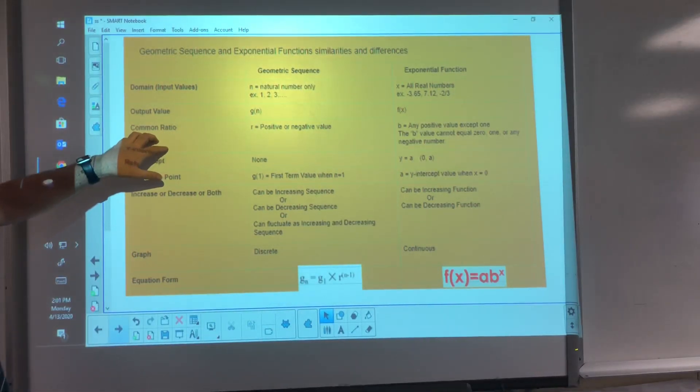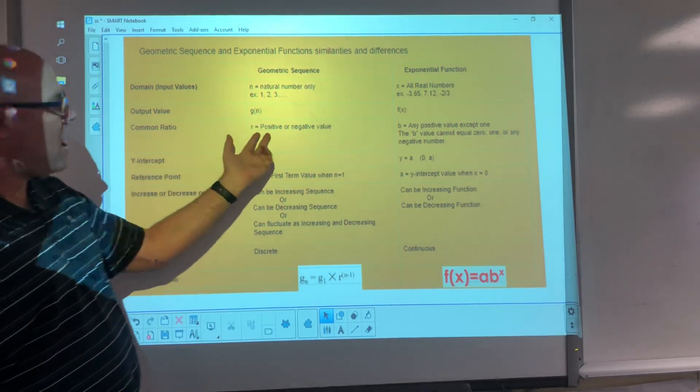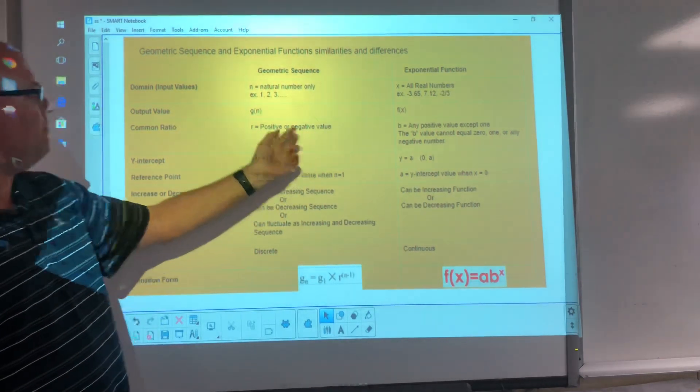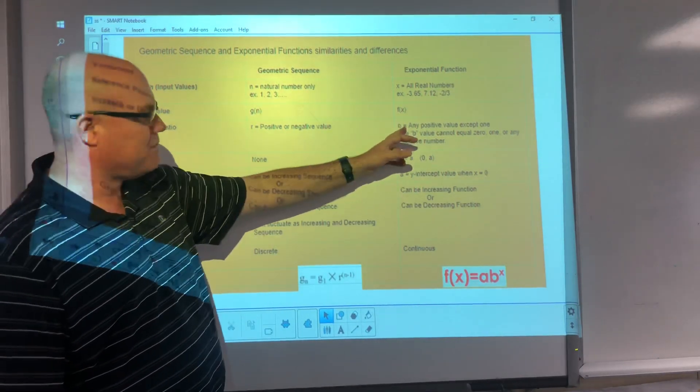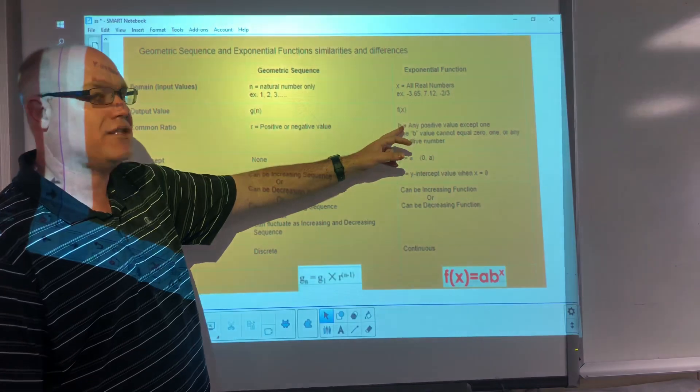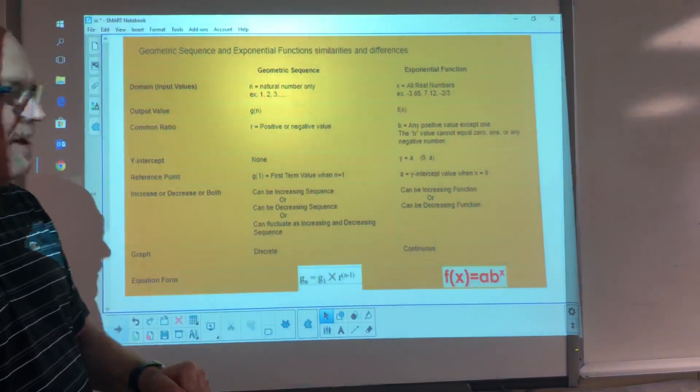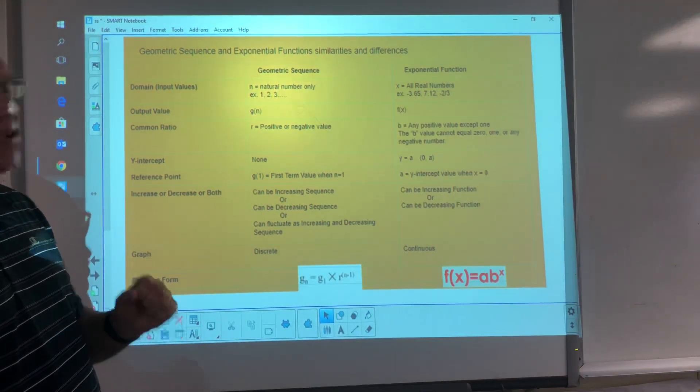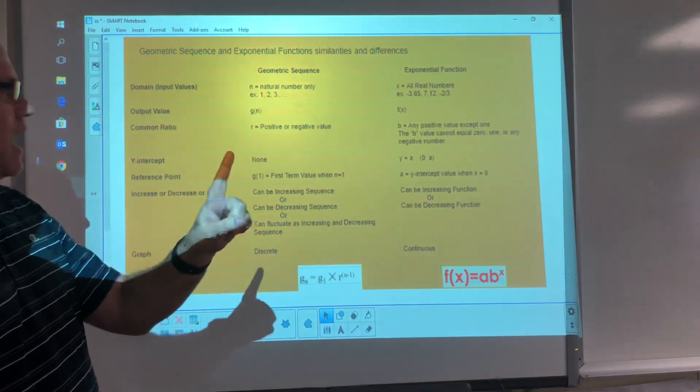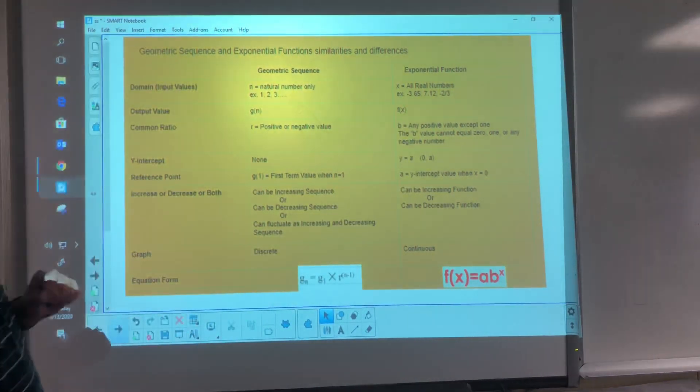All right. Our common ratio is the r value, and that value can be positive or negative for geometric sequence. We're going to find an exponential functions. That's going to be represented by the b. We're going to call it the constant ratio. But that value has to be a positive value. Cannot be zero. Cannot be a negative number. And it also can't be one. And we'll look at that reason why later. But it can't be one either. For it to be exponential.